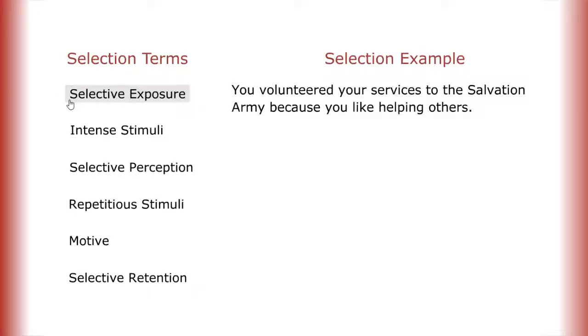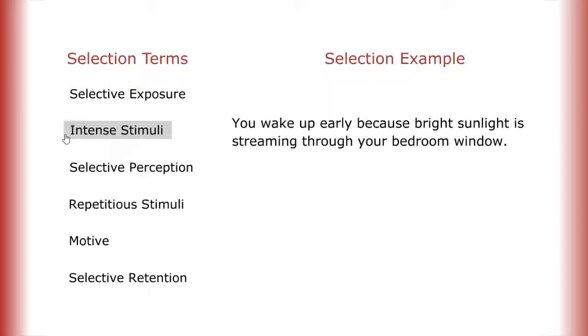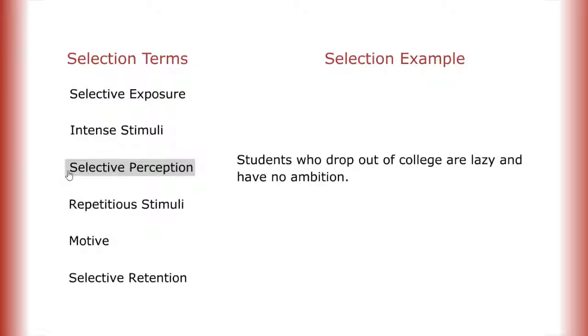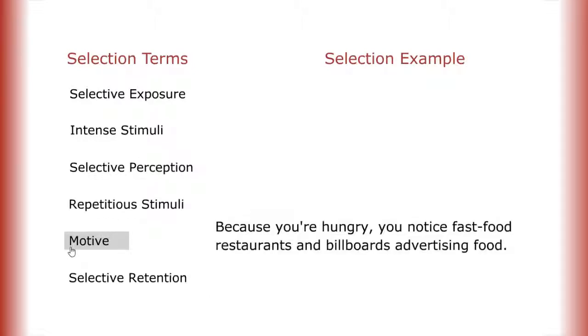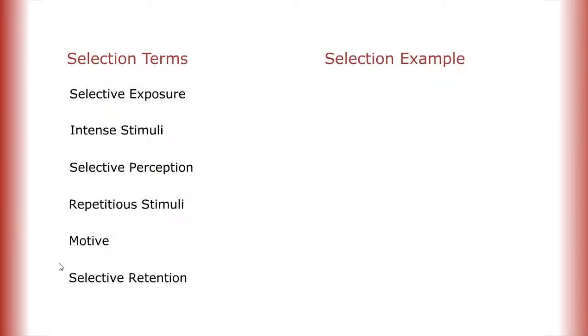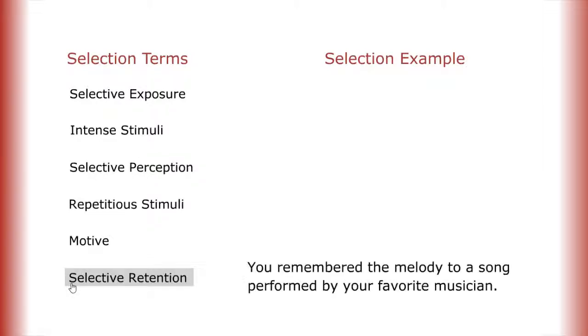Let's review some selection terms. Selective exposure: you volunteered your services to the Salvation Army because you like helping others. Intense stimuli: you wake up early because bright sunlight is streaming through your bedroom window. Selective perception: students who drop out of college are lazy and have no ambition. Repetitious stimuli: your dripping faucet keeps you awake. Motive: because you're hungry, you notice fast food restaurants and billboards advertising food. Selective retention: you remembered the melody to a song performed by your favorite musician.